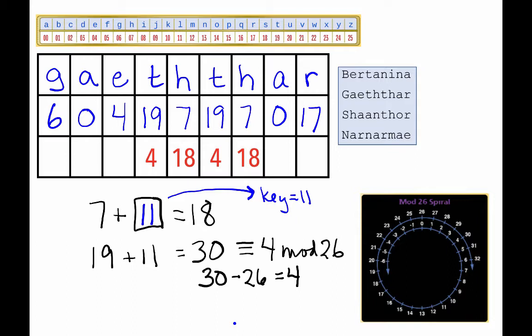To complete the puzzle, we need to finish the encryption by adding 11 to all of the numbers in the second row. So, 6 plus 11 is 17, 0 plus 11 is 11, 4 plus 11 is 15,